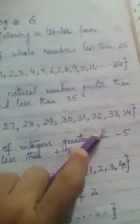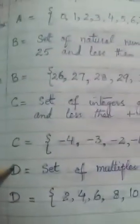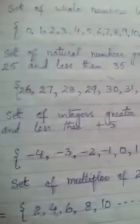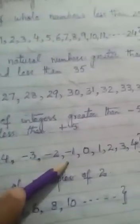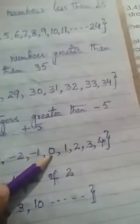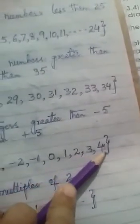C = set of integers greater than -5 and less than +5. Answer: C = {-4, -3, -2, -1, 0, 1, 2, 3, 4}.